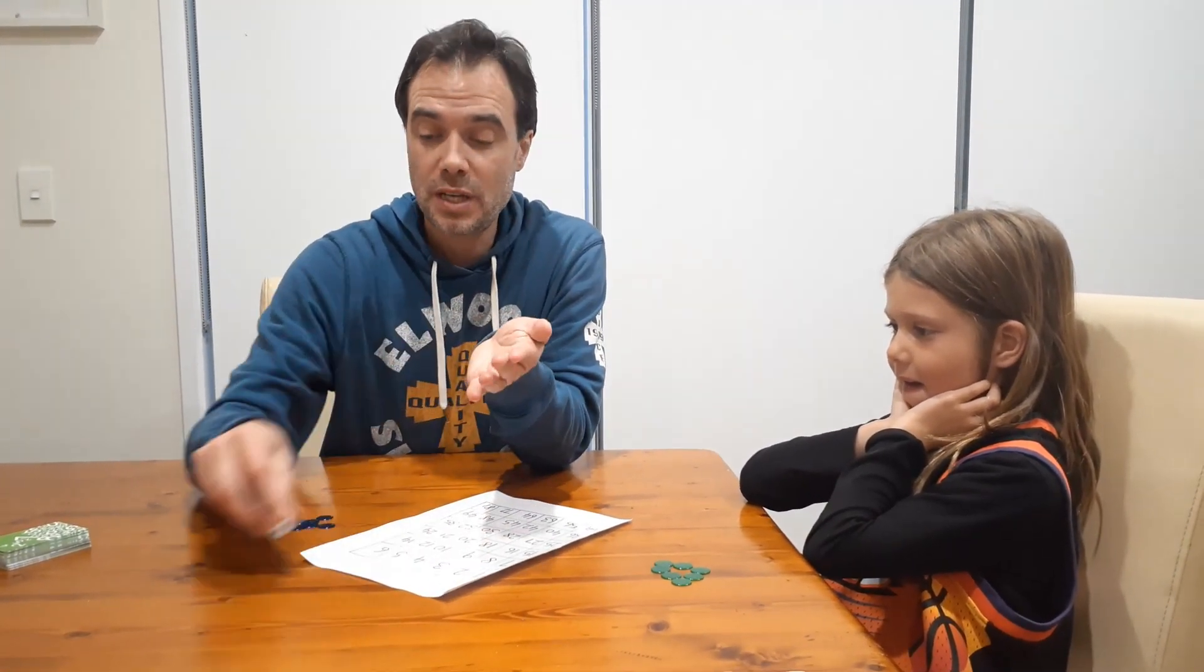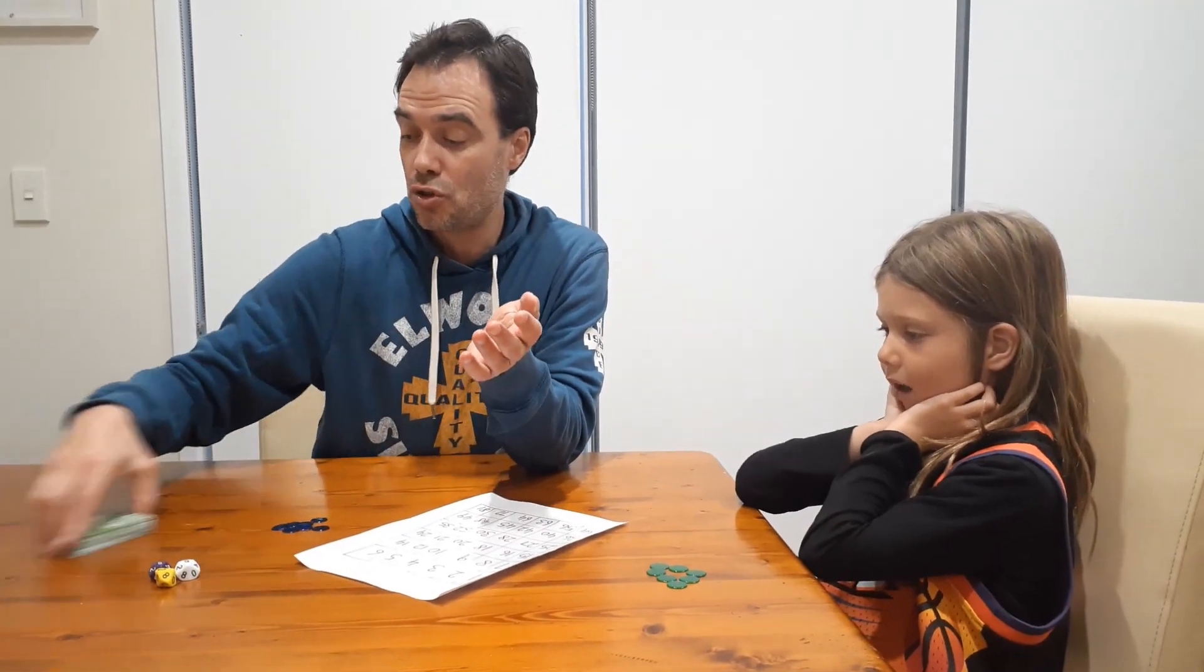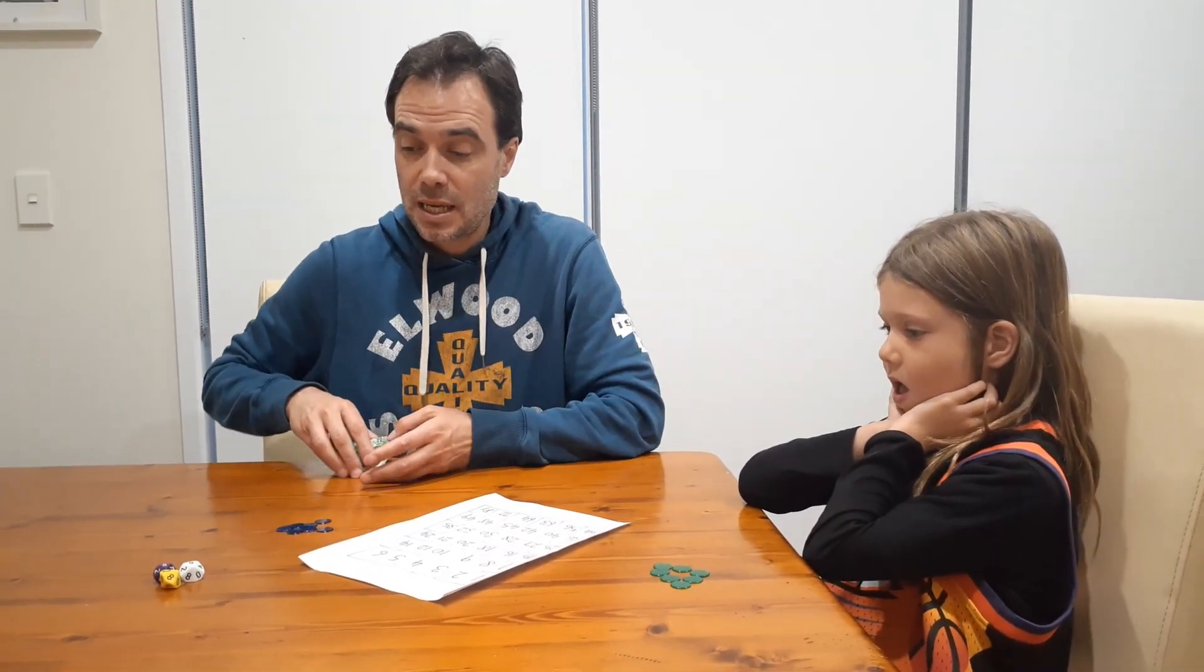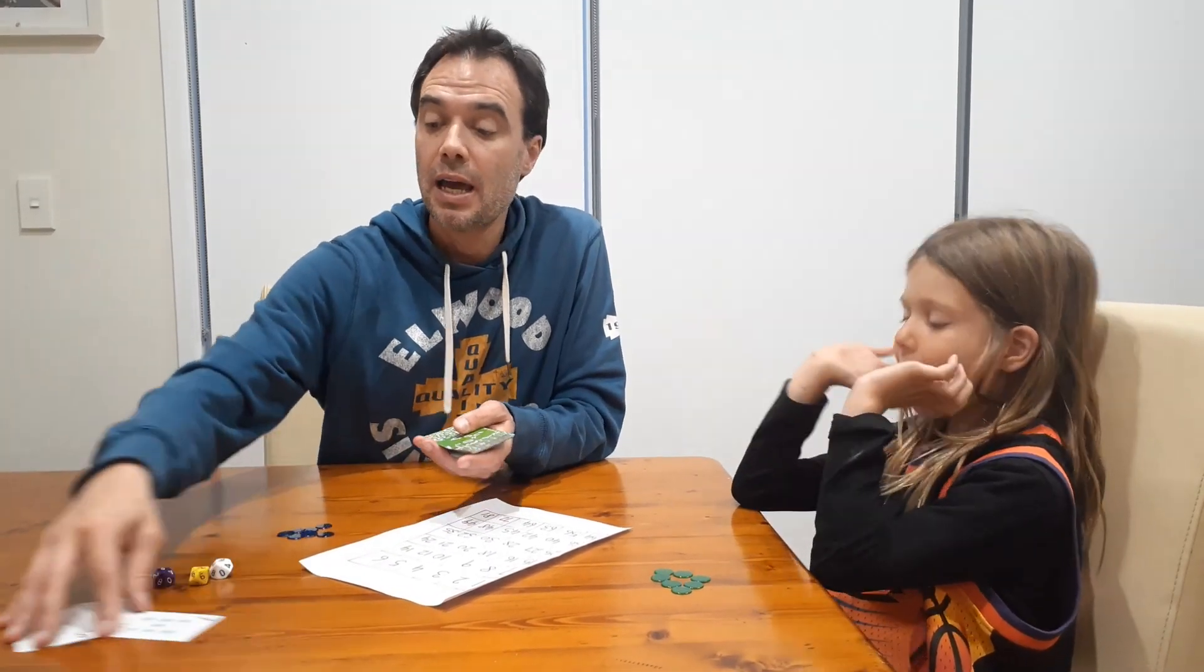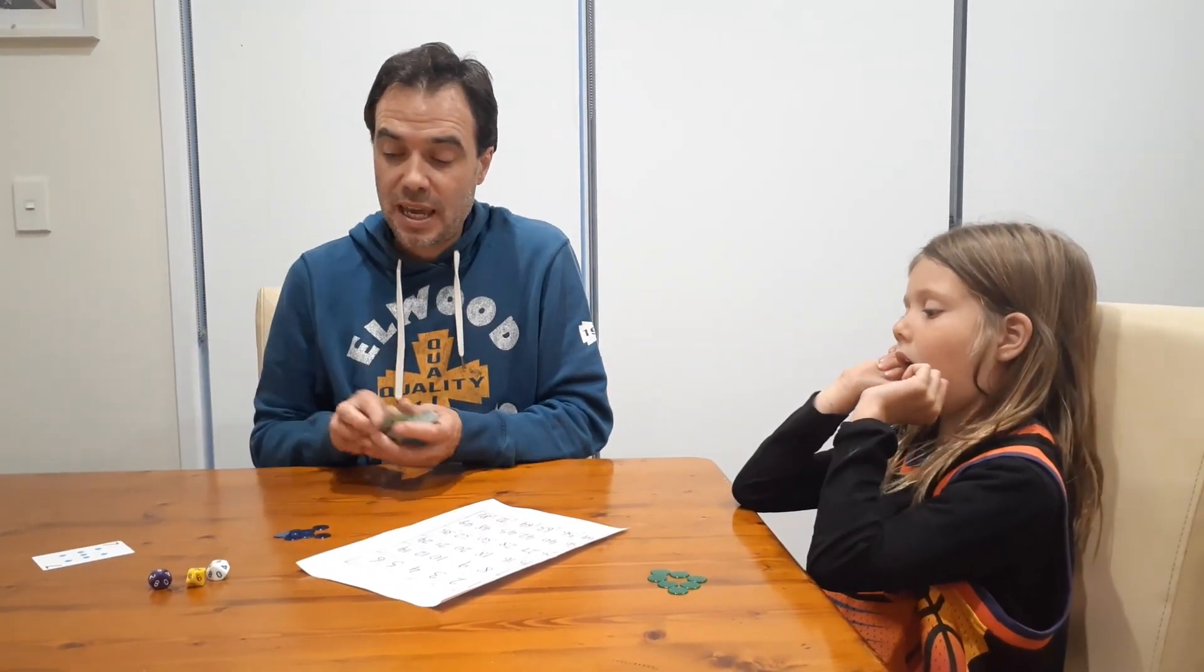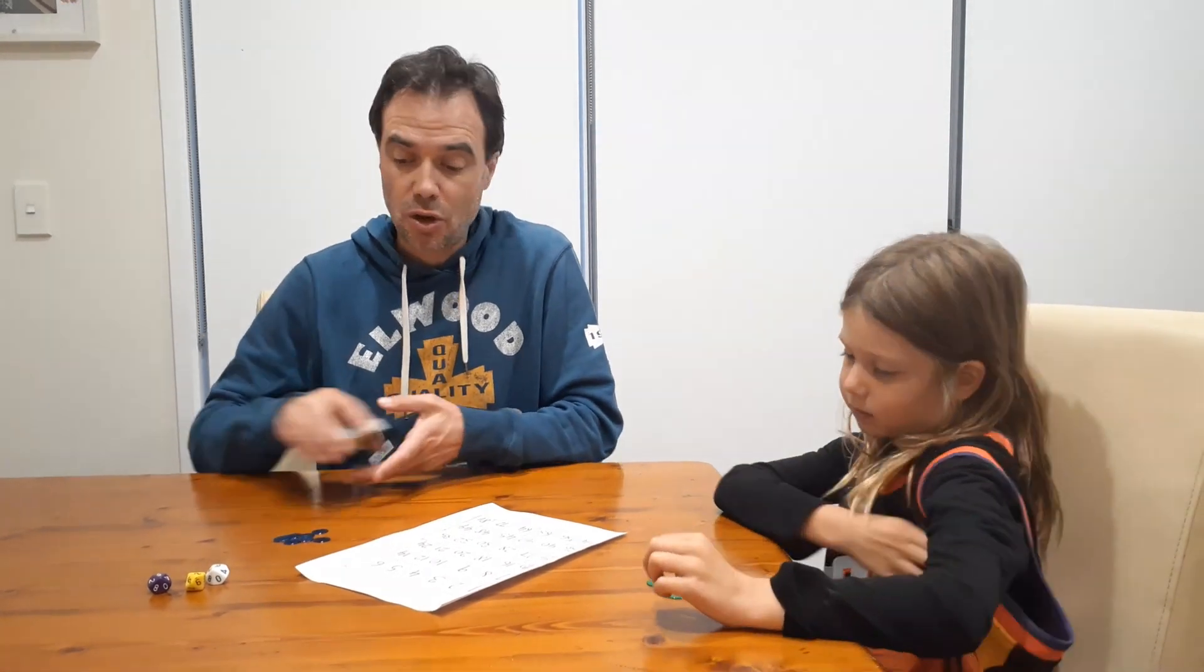If you don't have ten-sided dice at home you could use a deck of cards and you would be flipping over three cards instead of rolling three dice. You also need seven counters in two different colors. So I'm going to be blue for today, Nash is going to be green, and you need a game board.